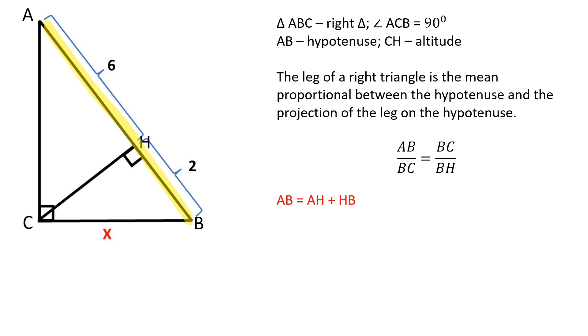AB is equal to the sum of AH and HB which is 8. Let's substitute in the side length values. 8 over x is equal to x over 2. Therefore x is equal to 4.